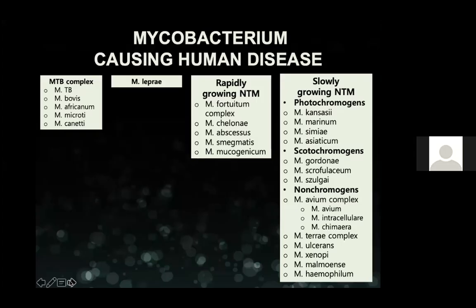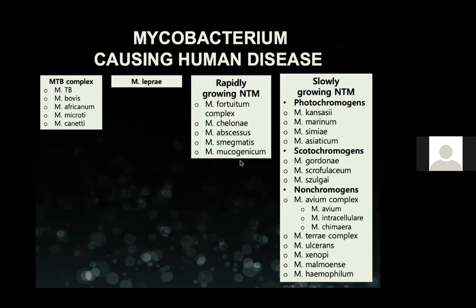So mycobacteria causing human disease — on the slide on the left, we know the mycobacterial tuberculosis complex pretty well. It also includes mycobacterium leprae, which causes leprosy. In terms of the non-tuberculous mycobacteria, this classification is based on the Runyon classification, which divides them based on rate of growth. You've got rapidly growing NTMs and slow-growing NTMs, with slow-growing NTMs further classified according to yellow pigment production — whether this is produced in the dark or after light exposure. There are quite a lot of NTMs, and this list isn't even exhaustive.